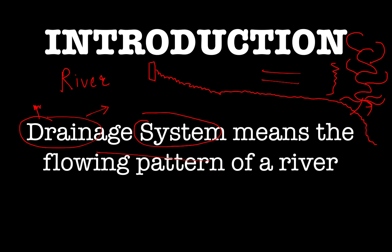Before we move ahead, let me mention the three stages of a river. When the river originates, it is known as the youth stage. When it enters into the plains, it is the mature phase. When it is in its later plains and about to merge, it is the old phase — also known as the upper course, middle course, and lower course of the river.